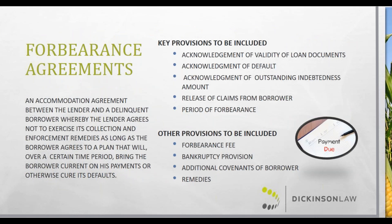Moving on to forbearance agreements: the basic concept is that the lender agrees to forbear from exercising its remedies provided that the note default has occurred, and that during the forbearance period the borrower takes certain steps to address loan repayment or collateral concerns. The forbearance agreement is typically a strong indication that the future of the particular credit is limited, at least in its current form. In my experience, many forbearance agreements are negotiated over weeks or even months but a lot of times never actually get entered into.